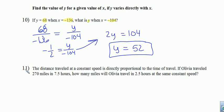Let's go ahead and do number 11 while we're sitting here. Number 11, we've got a direct proportion again. Olivia traveled 270 miles in 7.5 hours. How many miles? We don't know this one. Did she travel in 2.5 hours? Well, since we have a direct proportion, we can set up her proportion.